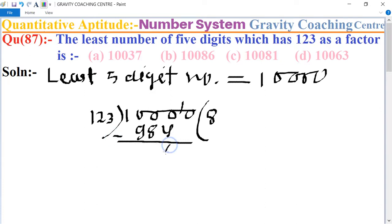So 6, 16. 16 is smaller than 123, so here put zero and bring down one. 123 into 1, so 123. So the remainder is 37.